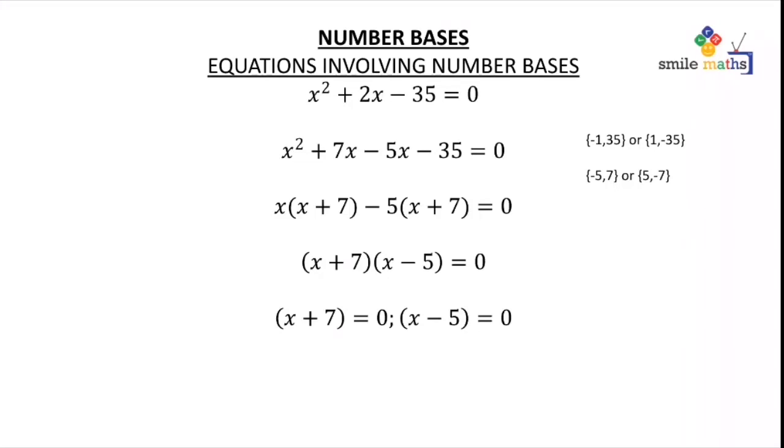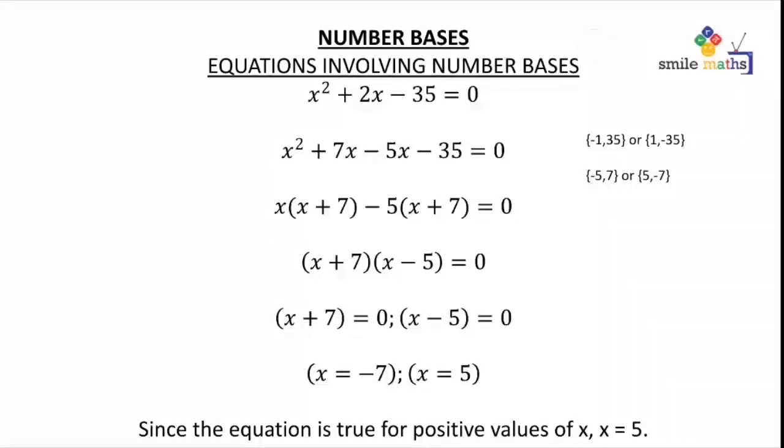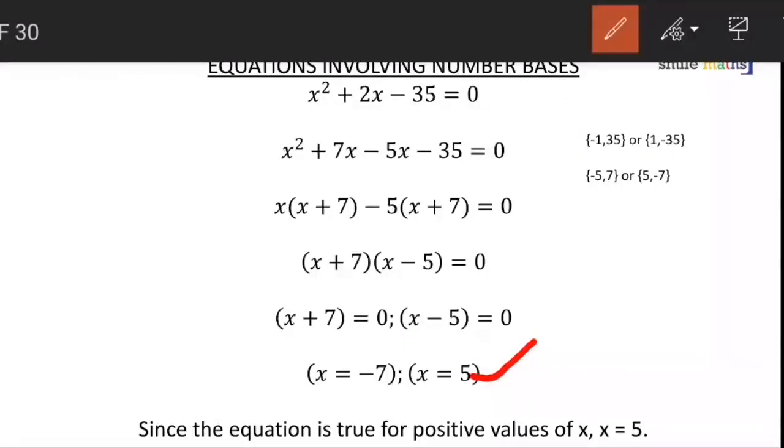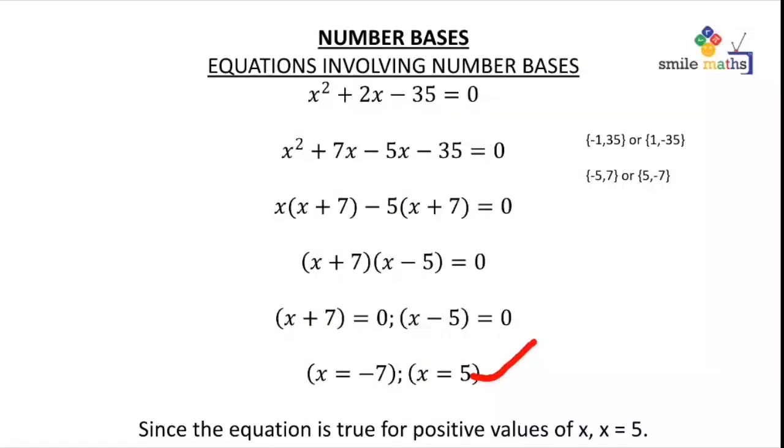What it means is that either x plus 7 is equal to 0 or x minus 5 is equal to 0. Now solving this, we are going to have x equals negative 7 and x equals 5. Since the number of bases are mostly positive numbers, and the equation is true for positive values of x, our answer is going to be x is equal to 5, because the other one is negative 7.